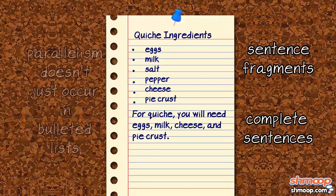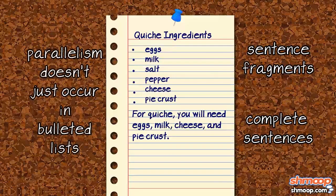As we mentioned earlier, parallelism doesn't just occur in bulleted lists. We also see it in sentences.